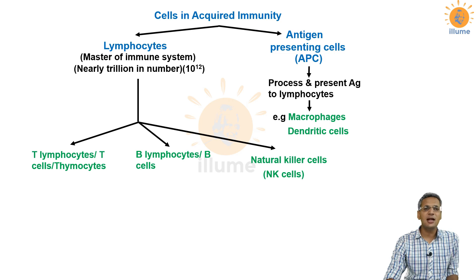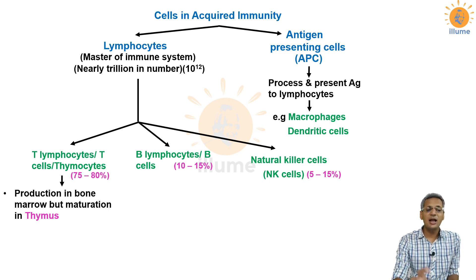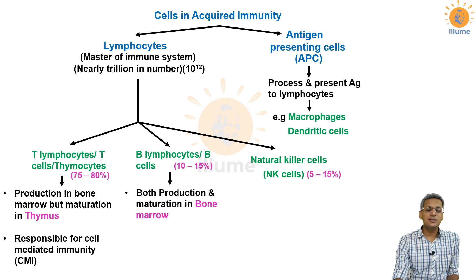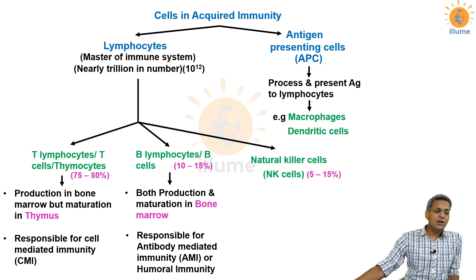T cells are produced in bone marrow and mature in the thymus. Around 75 to 80% of lymphocytes are T lymphocytes, 10 to 15% are B lymphocytes, and 5 to 15% are NK cells. T cells are responsible for cell mediated immunity. B lymphocytes are produced and mature in bone marrow and are responsible for humoral immunity or antibody mediated immunity.